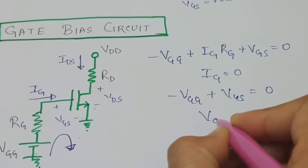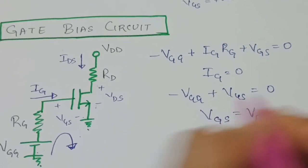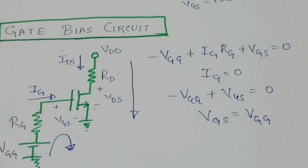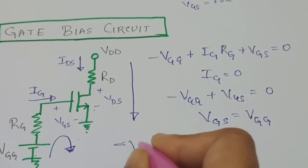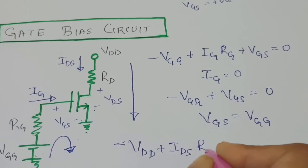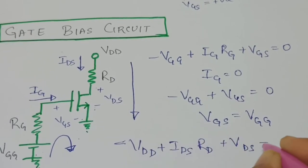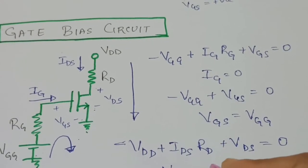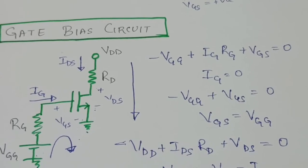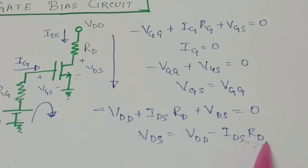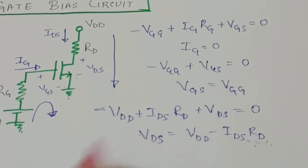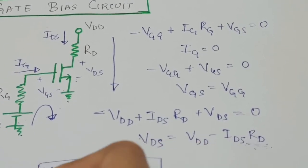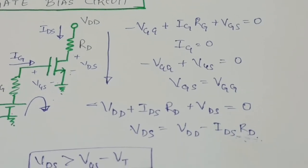Applying KVL in the drain loop: −VDD + IDS * RD + VDS = 0. Therefore VDS = VDD − IDS * RD. The drain resistance RD is selected such that VDS is greater than VGS minus VT, which is the condition for the MOSFET to operate in the saturation region.